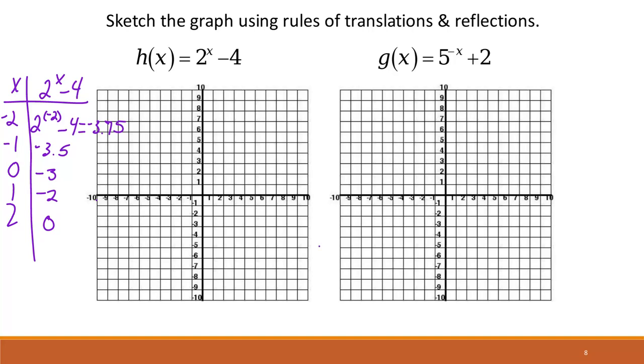So if I plot those points, I have the point 0, negative 3. I have the point 1, negative 2. I have the point 2, 0.